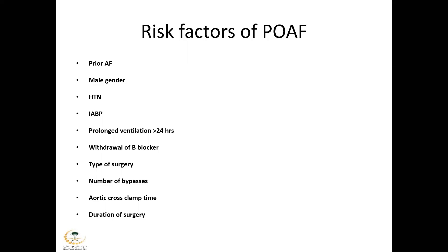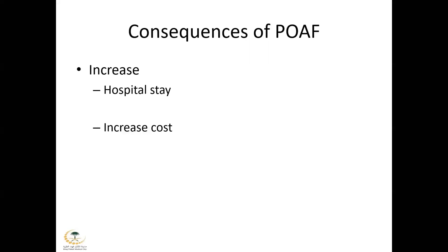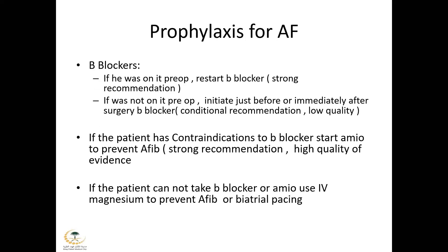Post-operative AF increases hospital stay and cost. For prophylactic prevention: if the patient was on beta-blocker pre-op, restart it as soon as possible. If not pre-op, initiate just before or immediately after surgery. If there is a contraindication to beta-blocker, amiodarone can be used. If neither beta-blocker nor amiodarone is possible, IV magnesium can be used, or biatrial pacing with pacer wires in both right and left atrium. For high-risk patients, Sotalol or a combination of two or more agents — beta-blocker, magnesium, amiodarone, or biatrial pacing — can be used.